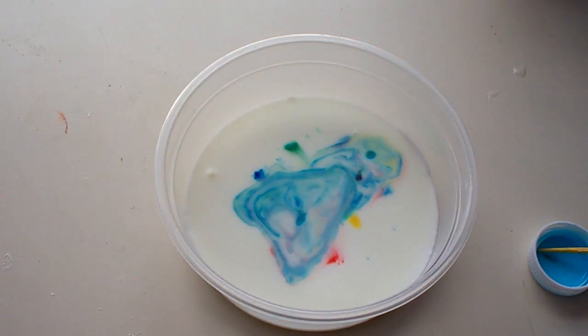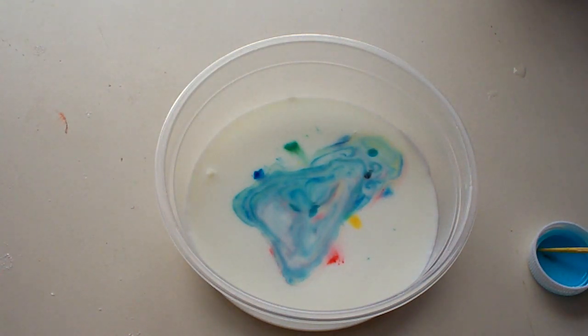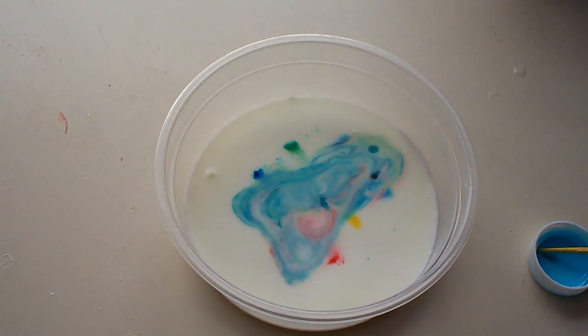One thing that's fun about this activity is that every time you do it, it'll be different. You get different patterns. Sometimes it's very slow and doesn't do much. Sometimes it'll go much faster and be more active. You can experiment with different types of milk: low-fat milk, whole milk, half-and-half. You can also experiment with temperature. My milk here is at room temperature. Try cold milk, try warmer milk.